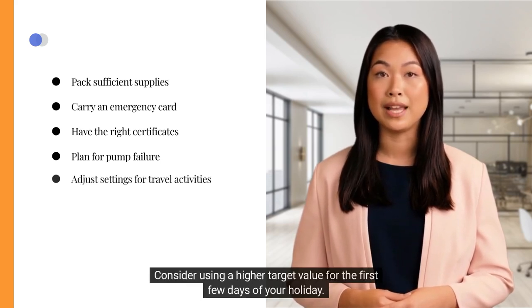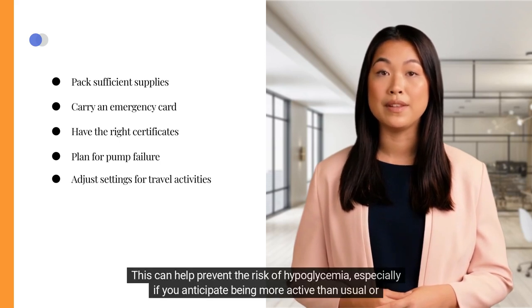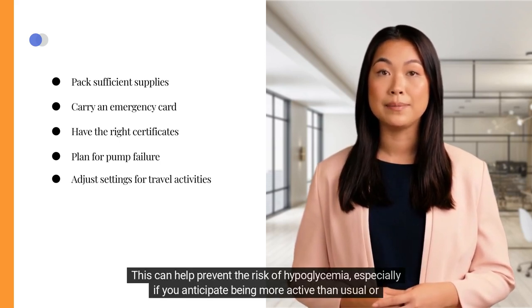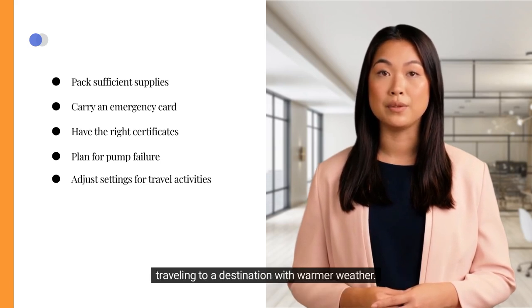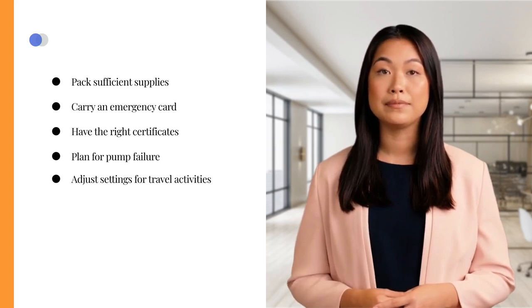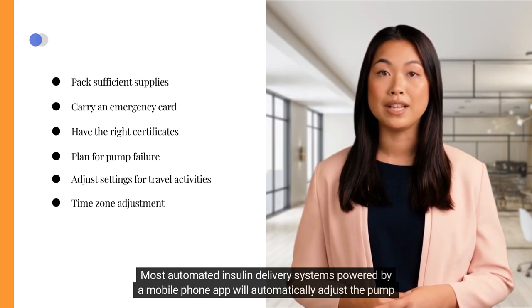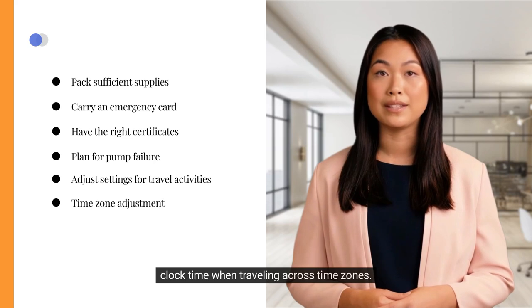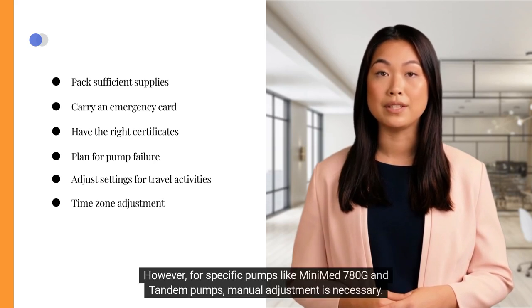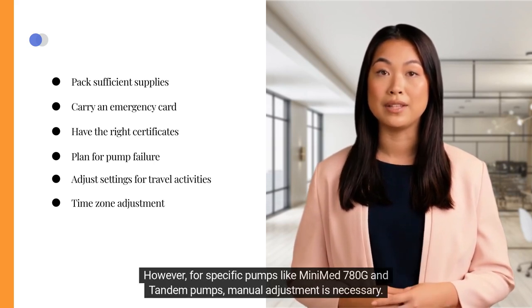Consider using a higher target value for the first few days of your holiday. This can help prevent the risk of hypoglycemia, especially if you anticipate being more active than usual or traveling to a destination with warmer weather. Most automated insulin delivery systems powered by a mobile phone app will automatically adjust the pump clock time when traveling across time zones. However, for specific pumps like MiniMed 780G and Tandem pumps, manual adjustment is necessary.